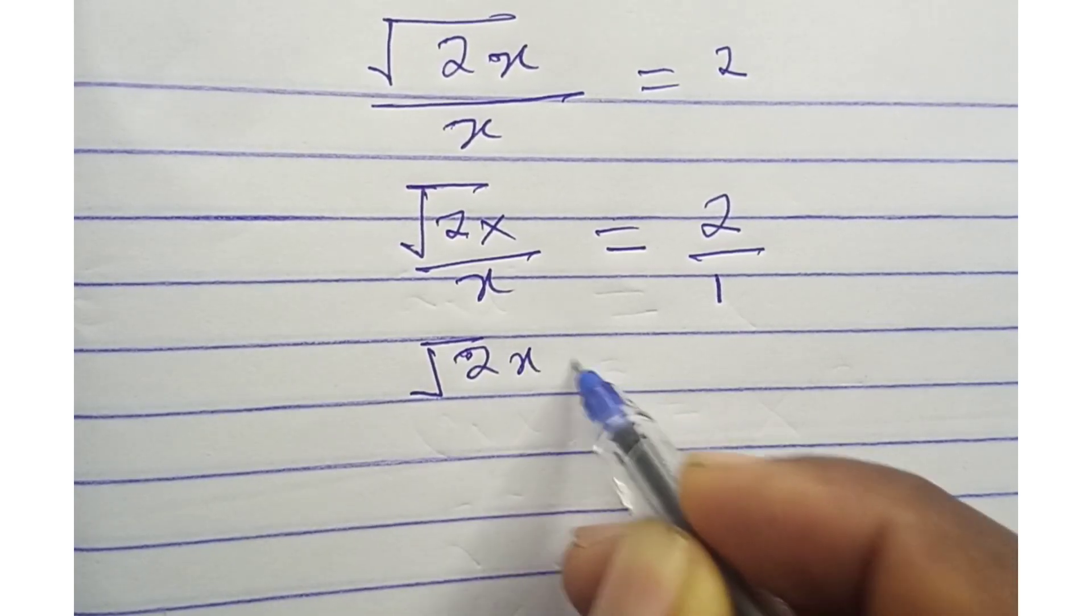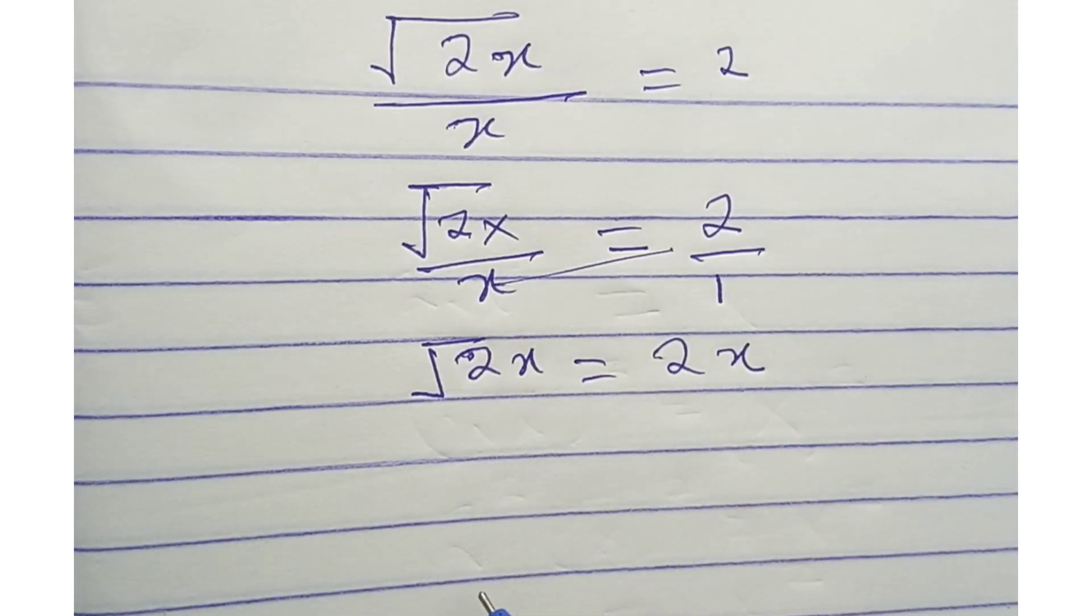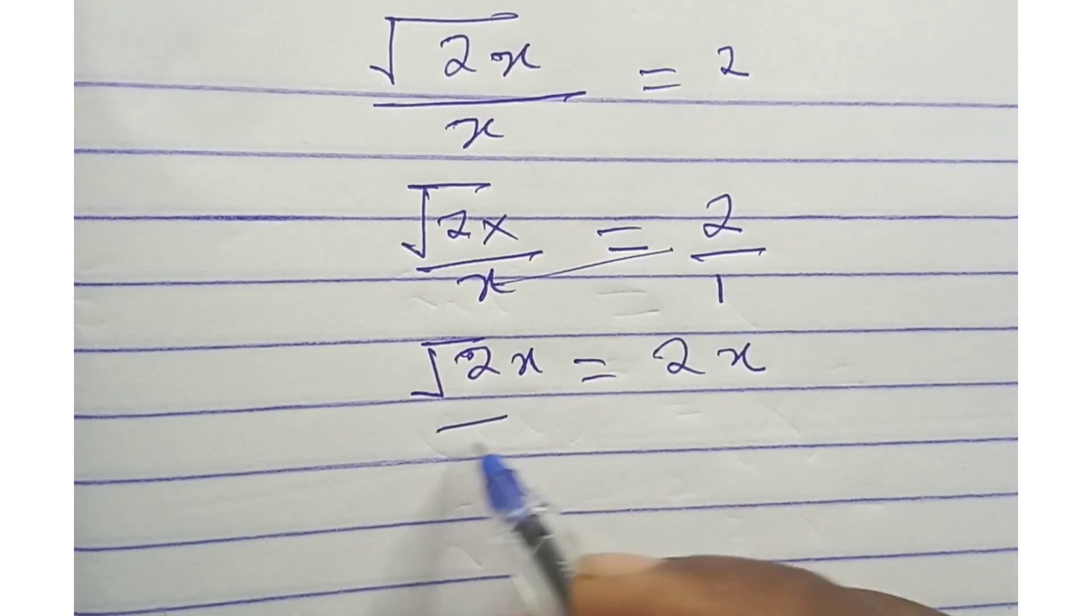Root 2x equals 2 times x is 2x. So we square both sides. We're going to have root 2x all squared equals 2x squared.